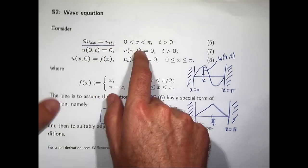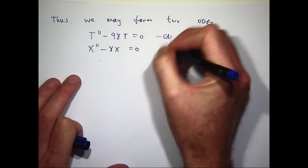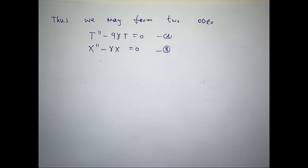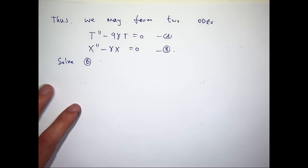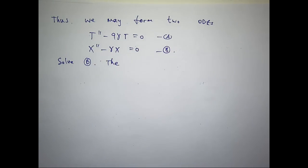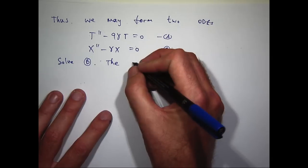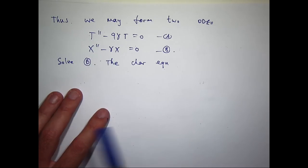The reason for starting with the X equation is basically due to the boundary conditions — these two boundary conditions are well suited to forming boundary conditions for big X. Let's call these big A and big B. How do we solve second-order linear homogeneous problems with constant coefficients? We write down the characteristic equation. For equation B, the characteristic equation is lambda squared minus gamma equals zero, so lambda squared equals gamma.